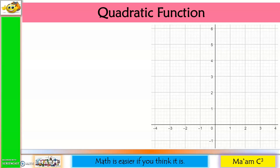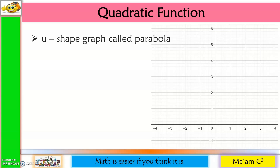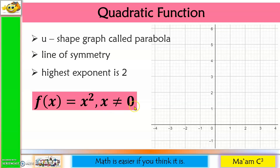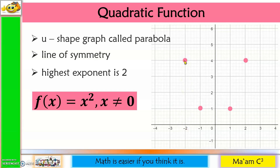Another function is the quadratic function, which has a U-shaped graph called a parabola. The parabola has a line of symmetry, and the highest exponent is 2. The parent function is f(x) = x², where x ≠ 0. Plotting points: 1² = 1, (-1)² = 1, 2² = 4, (-2)² = 4. The vertex of this parent function passes through (0, 0).